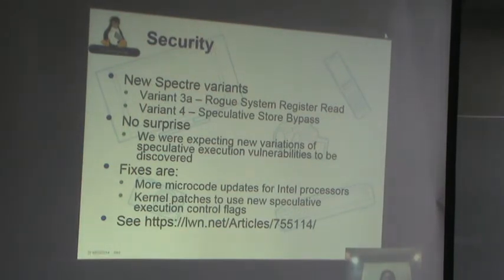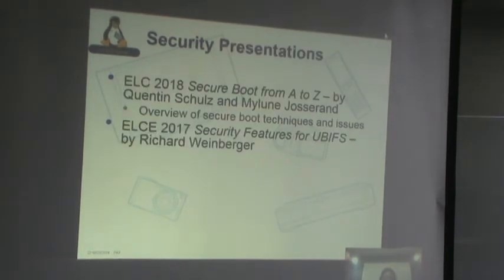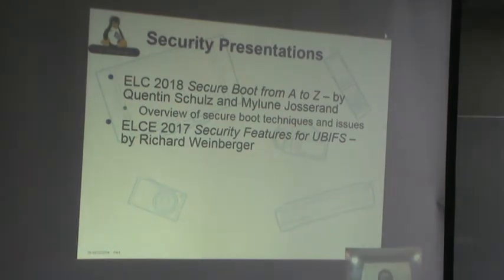There are fixes for Variant 3A and 4 already in the pipeline — kernel patches you can get, and microcode updates for Intel processors. These security flaws are fairly serious but can be dealt with. There were also presentations at conferences on other aspects of security: file system security features for UBIFS, and a good presentation by Clinton Schultz and others talking about all the different techniques and issues involved with secure boot — making sure you're running trusted kernels, modules, and applications on your system. Many of these vulnerabilities require running untrusted code.